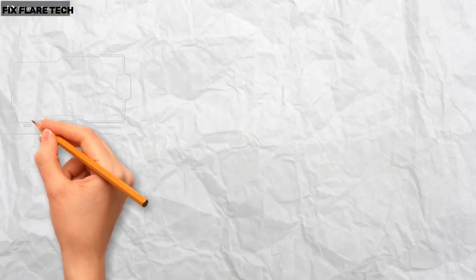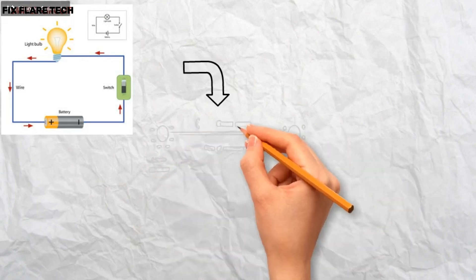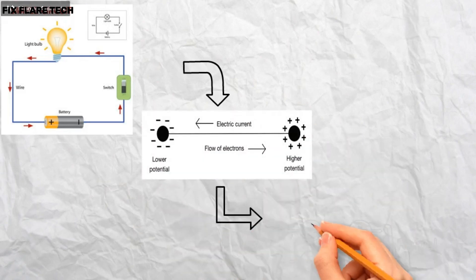Conventionally, in an electric circuit the direction of electric current is taken as opposite to the direction of the flow of electrons, which are negative charges.